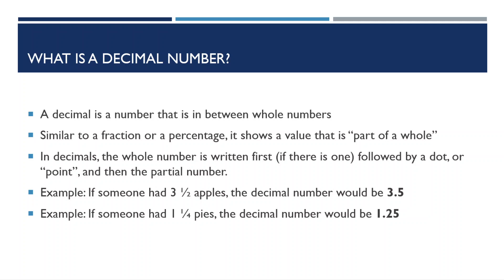For example, if someone had three and a half apples, the decimal would be 3.5. This is because .5 is the same as 50%, or halfway between two numbers. Similarly, if someone had one and a quarter pies, the decimal number would be 1.25. .25 is the same as 25%, or a quarter of the way to the next whole number.